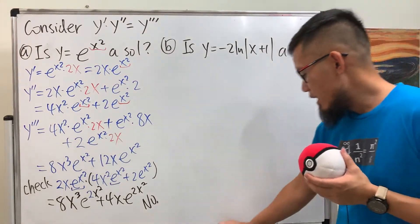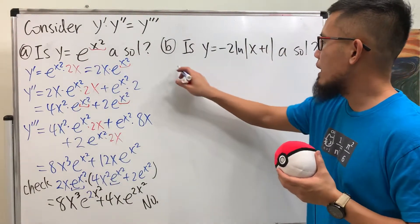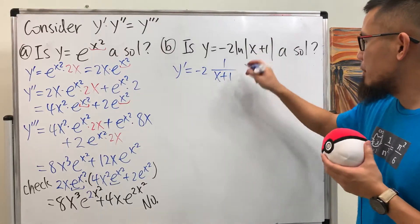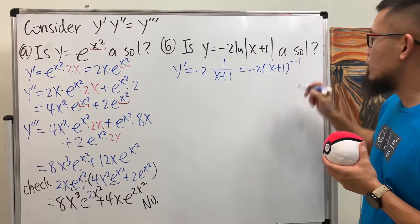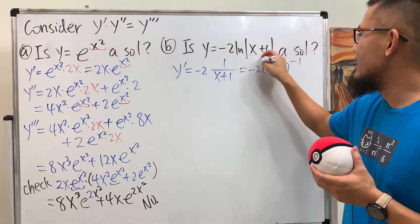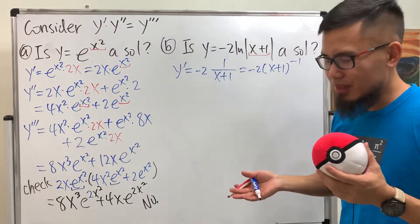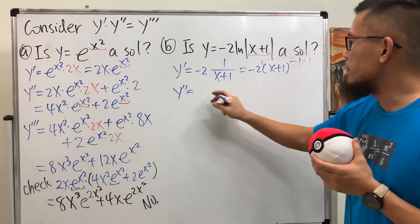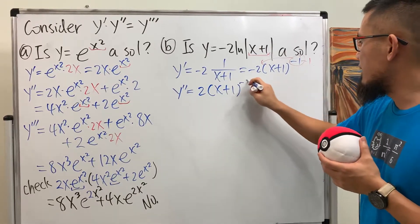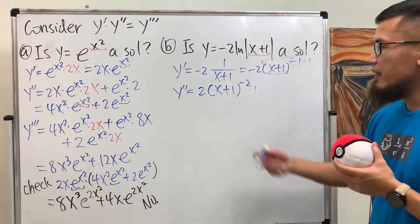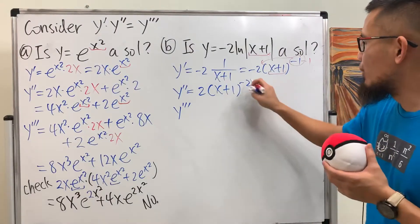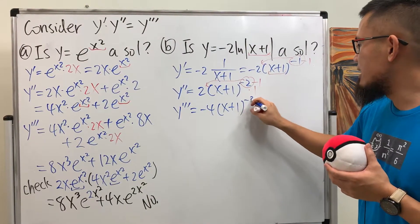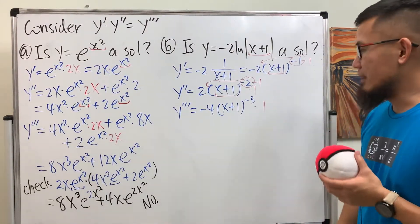For part b, let's try y equals negative 2 ln(x+1). Differentiating: y prime is negative 2 times 1 over (x+1), which is negative 2(x+1) to the negative one. The chain rule gives times one, so that's fine. y double prime: bring the exponent down to get positive 2(x+1) to the negative two. y triple prime: bring it down again to get negative 4(x+1) to the negative three.